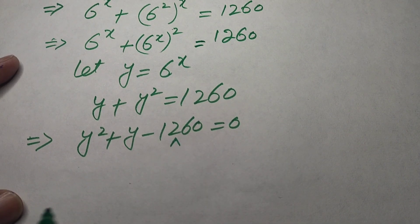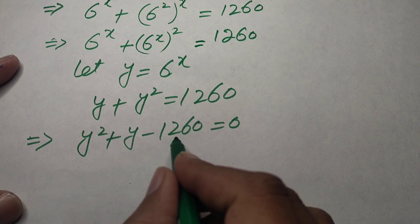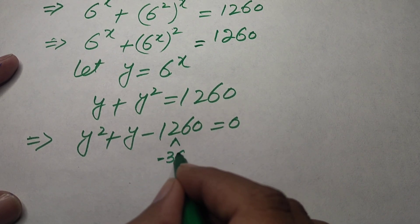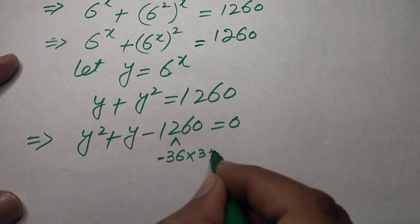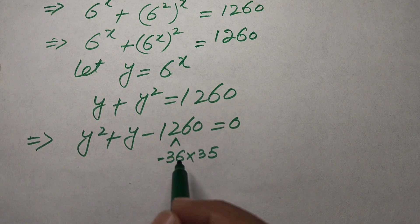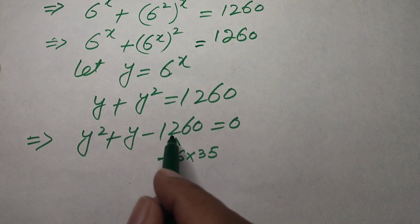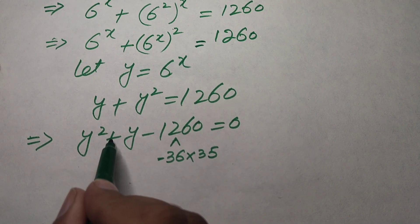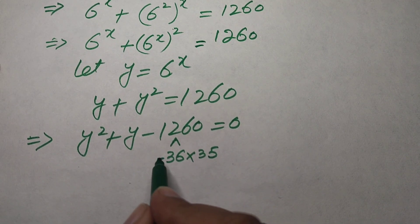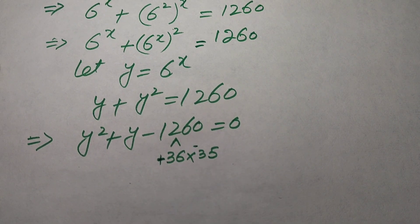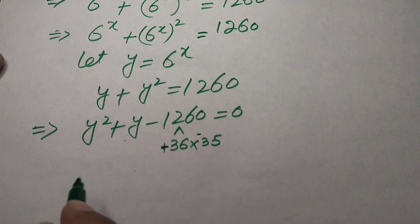We need two numbers that multiply to give minus 1260 and add to give plus 1. Those numbers are positive 36 and minus 35, because 36 × (−35) = −1260 and 36 + (−35) = 1.